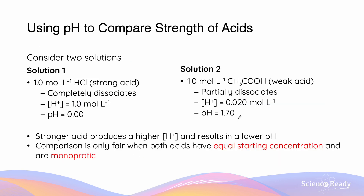Let's look at an example to see why this is important. Consider two solutions. In our first solution, we have hydrochloric acid, which is a strong acid, and it completely dissociates to give us an H⁺ concentration of 1 mole per liter. Using our pH formula — negative log of the H⁺ concentration — we get a pH of 0.